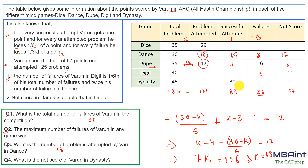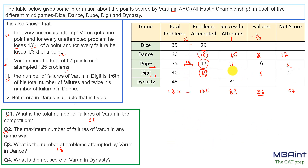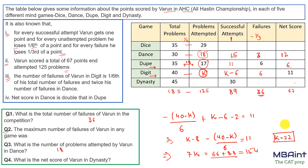Looking at the digit row — call attempts k. With 6 failures and successful attempts = k − 6, the equation gives k − 6 − (40−k)/6 − 2 = 11. Solving: 7k/6 = 25 + 8 = 23 approximately, giving k = 22. So digit attempts = 22 and successful digit attempts = 22 − 6 = 16.